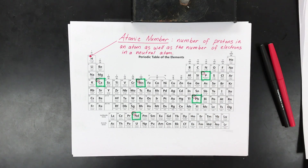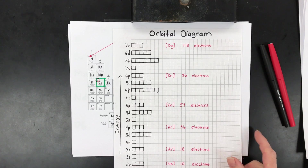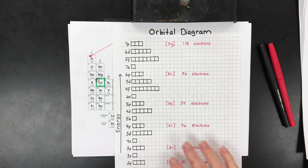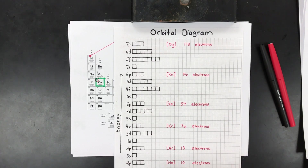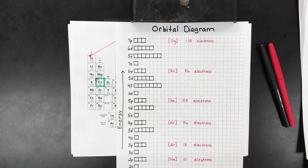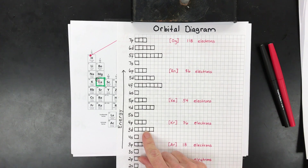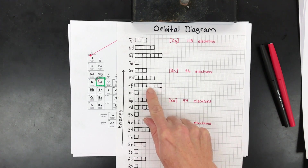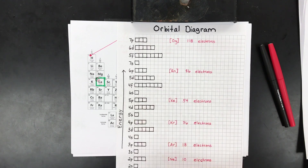Another helpful tool is an orbital diagram — I just printed off graph paper and listed all the orbitals. One box means only one orientation for an s orbital. A p has three different orientations in x, y, z. A d can have five orientations like I showed you, and an f can have seven. If there were a g orbital it could have nine different orientations.